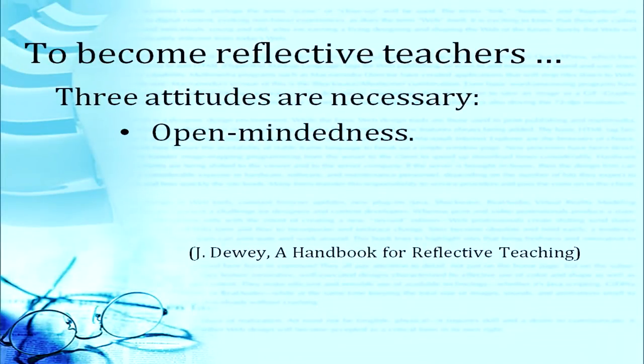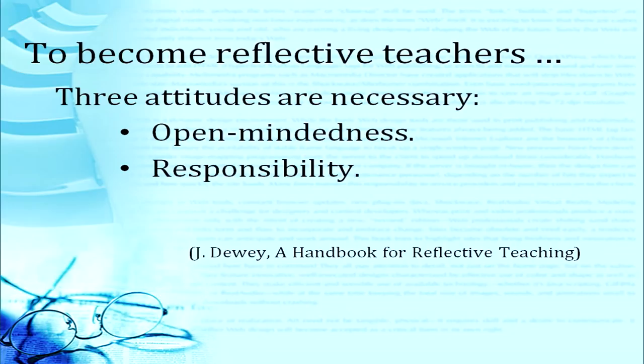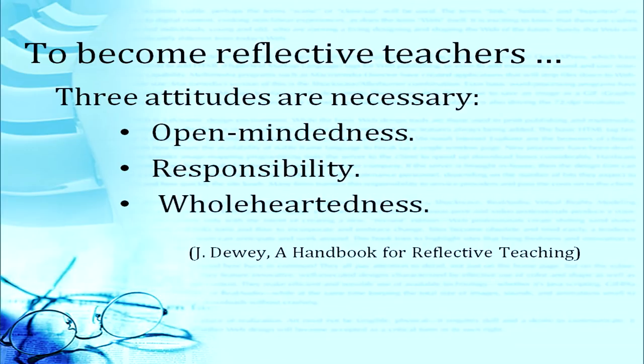We need to replace them with new strategies that actually work in the class. To become reflective teachers, John Dewey says three attitudes are necessary. One is open-mindedness — I should be open to criticism, open to change myself wherever required, open to question myself. Then I should be responsible, because I know that I am the one responsible for student learning. If the students don't learn well, then the teacher is responsible. Then comes wholeheartedness — I am very much willing to teach, I am passionate about teaching, and I actually want the students to learn in my class.